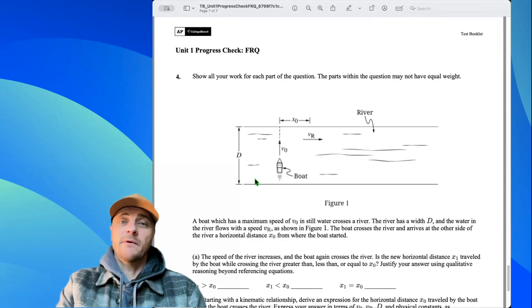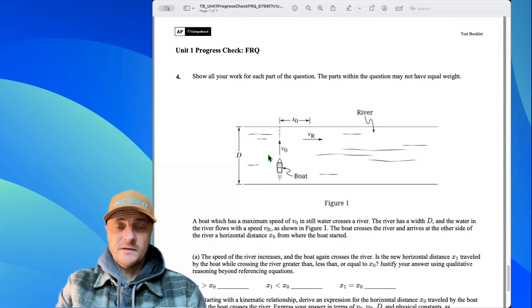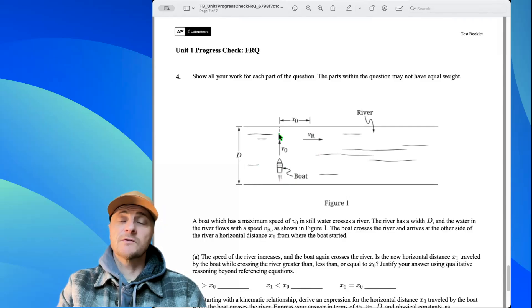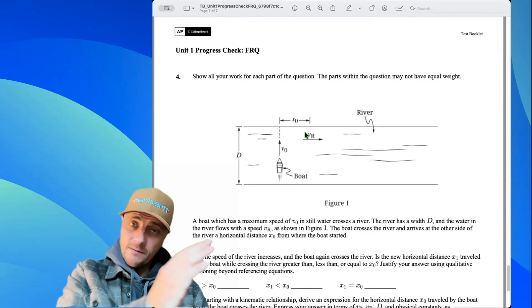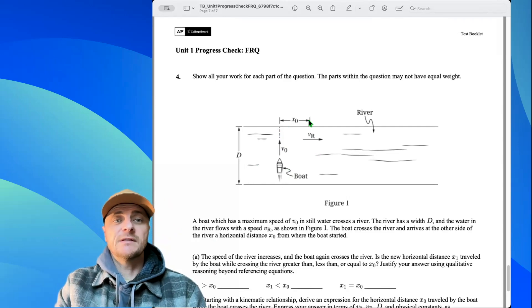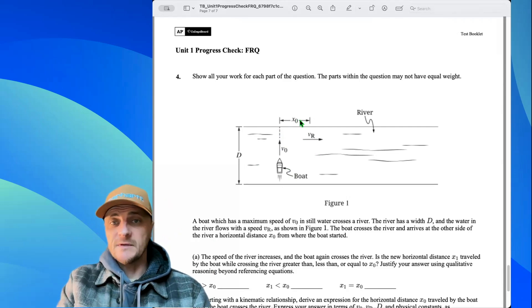We're looking at another progress check from AP Classroom, and this one is unit 1 number 4. So we've got a boat that's crossing a river of width distance d. The boat has a constant speed of v-naught in the y-axis, but in the x-axis we have a river velocity, and because of that river velocity, the boat doesn't simply go straight across. It would go off diagonally, being pulled downstream, and it would achieve a distance x-naught on the opposite bank.